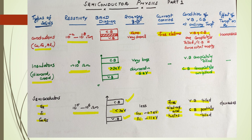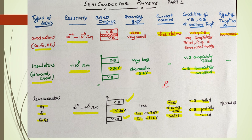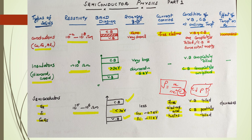The effect of temperature on resistance is very important. Resistivity rho equals m divided by n·e²·τ. For conductors, as temperature increases, relaxation time decreases, and hence resistivity increases — so resistance increases with temperature. But for semiconductors, the key parameter is n. With temperature increase, covalent bonds break, more electron-hole pairs form, and hence resistivity decreases.